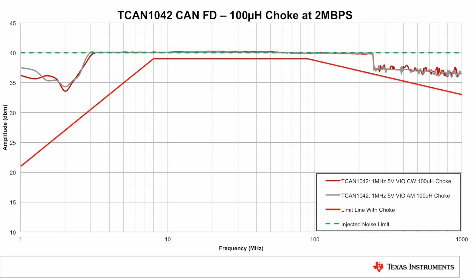The new T-CAN family is also qualified to operate in CAN-FD systems using flexible data rates up to 5 megabits per second. Here you can see the results of immunity testing using 2 megabits per second CAN-FD traffic, where again the T-CAN 1042 demonstrates compliance with strict immunity standards.